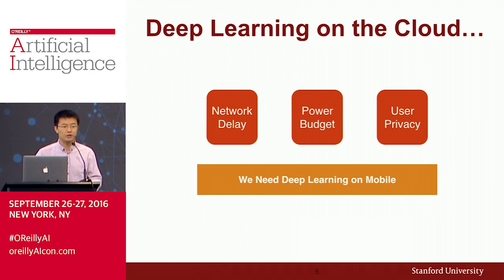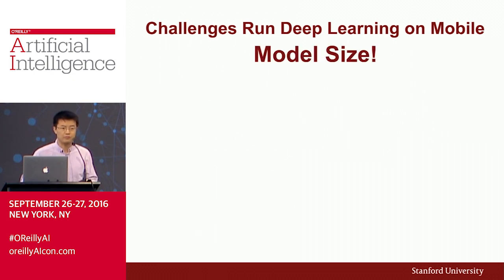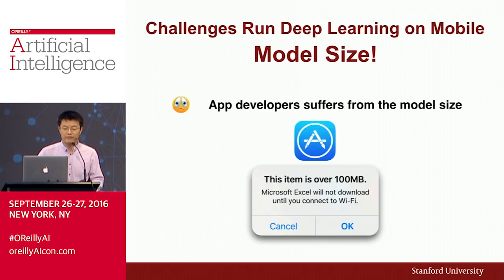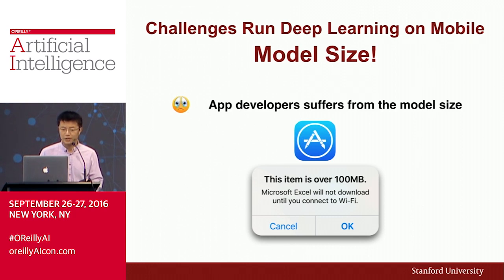So we really want Deep Learning locally on the mobile. The first challenge is model size. App developers suffer from model size because once an app is larger than 100 megabytes, users cannot download it until connected to Wi-Fi. After we uploaded our work on deep compression to the archive, Andrew Ng sent us an email thanking us, because Baidu can take advantage of model compression to make the app smaller.